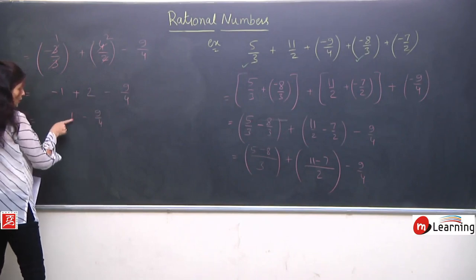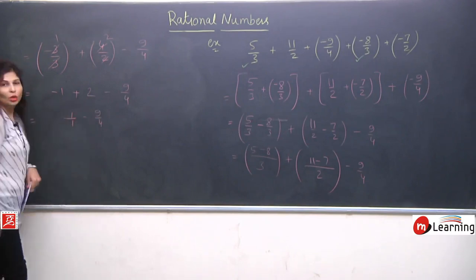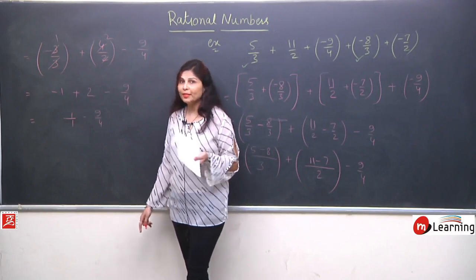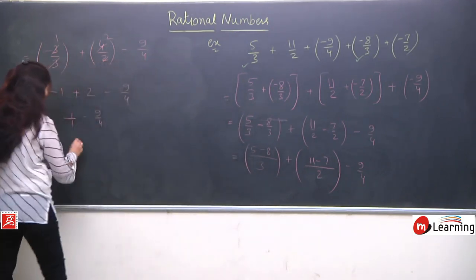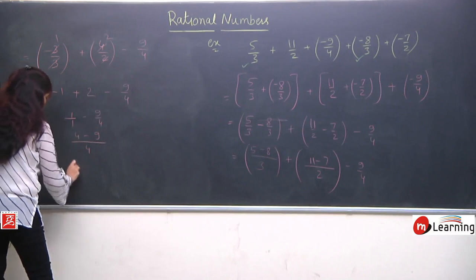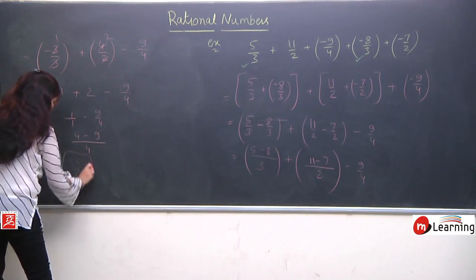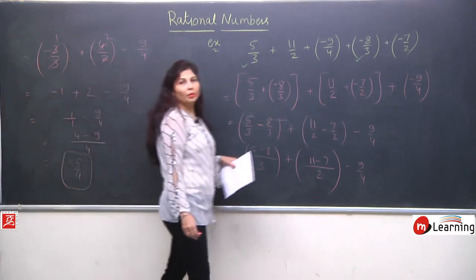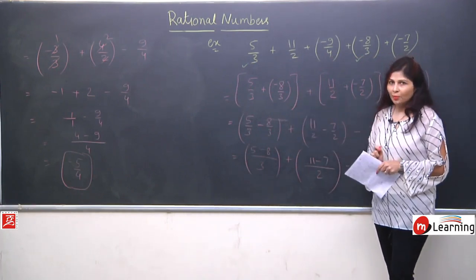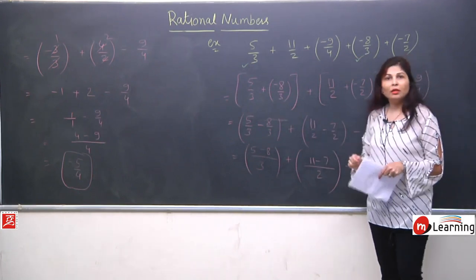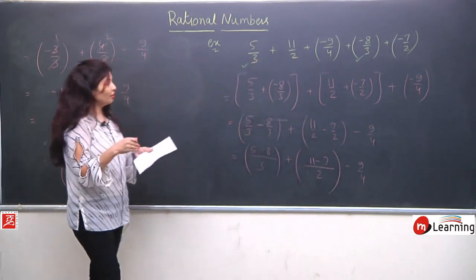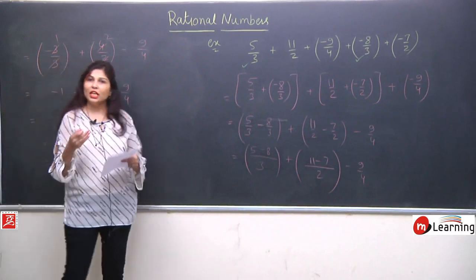So the final answer is -5/4. The benefit here came from grouping the same denominators together. If we had taken the full LCM at once, it could have been more complicated. You should check both methods and see which is easier. The answer -5/4 is already in simplest form since 5 and 4 share no common factor.